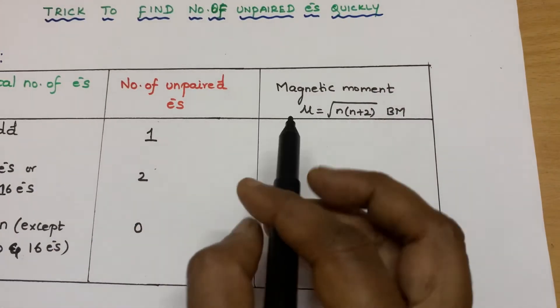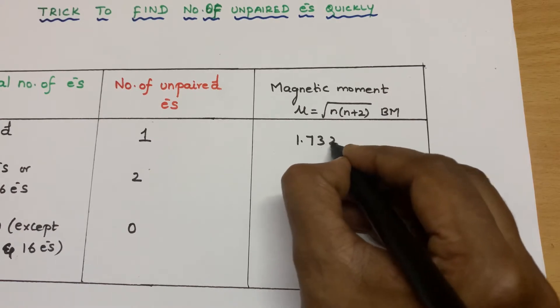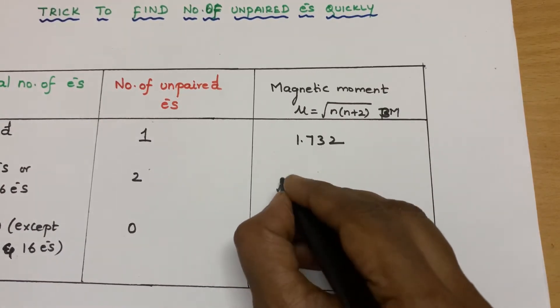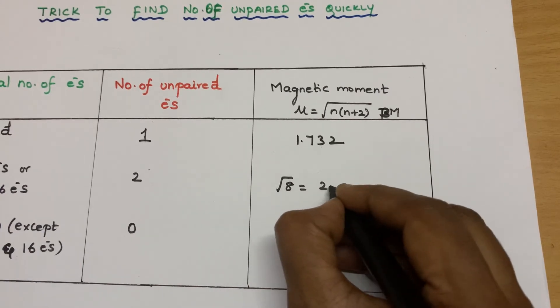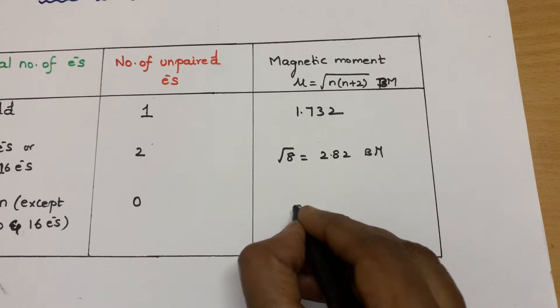If for odd number, one unpaired electron, what will be the Bohr magneton? 1.732 Bohr magneton. If it is 2, it will be root 8 and it will come around 2.82. And 0 is 0.